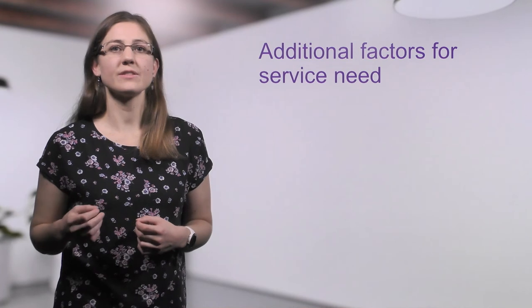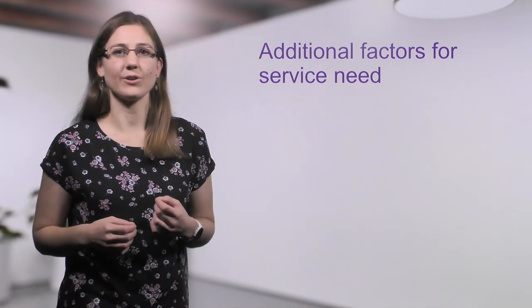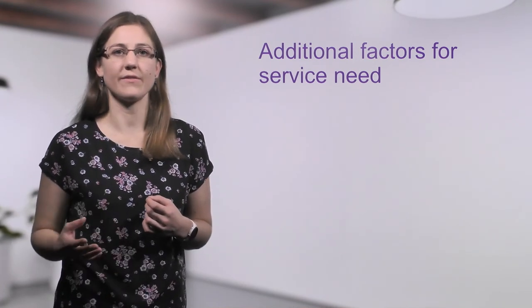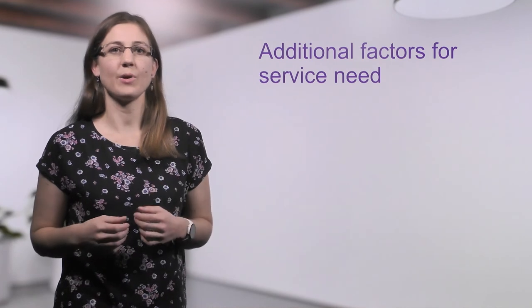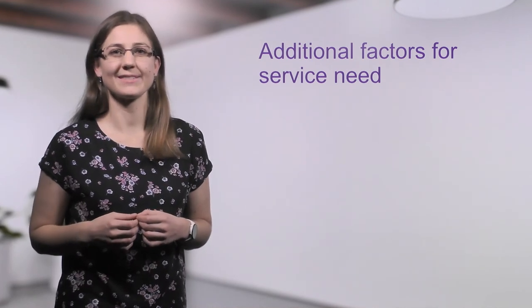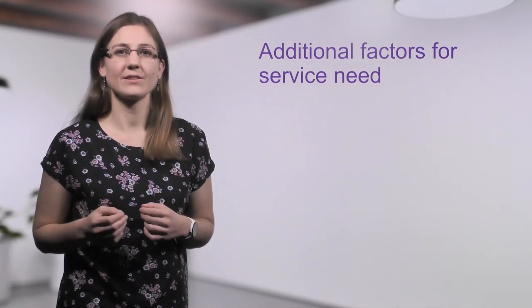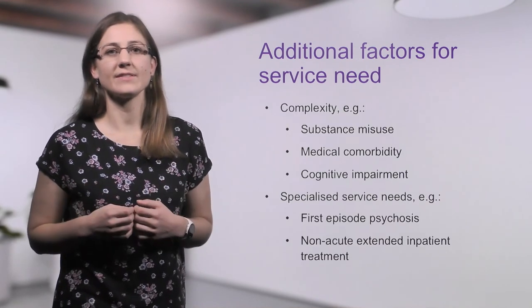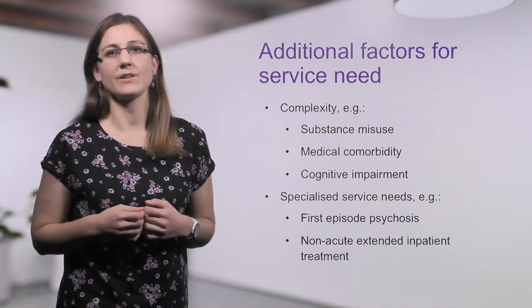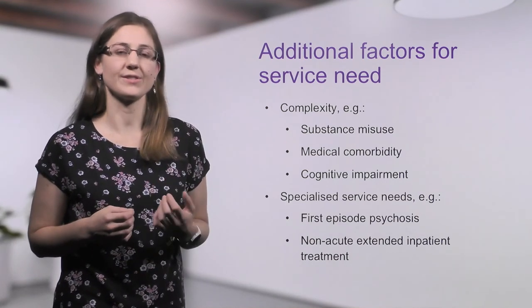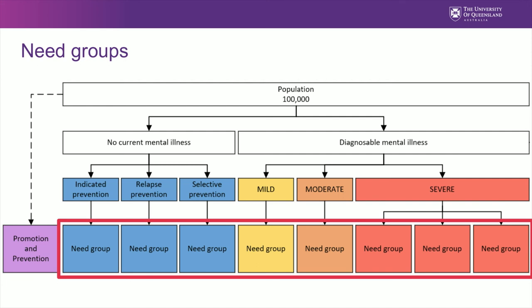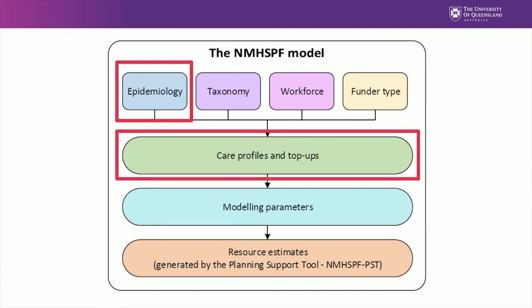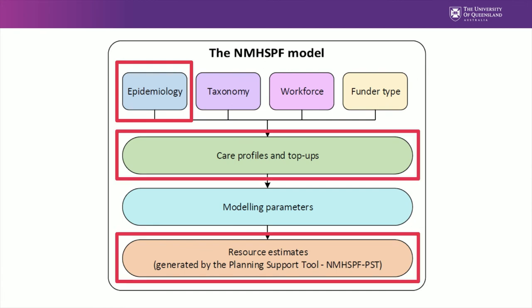Additional factors beyond severity are used to create need groups that represent people with similar service needs, particularly for populations with severe mental illness. The need groups are based on additional complexity such as comorbidities, or specialised service needs such as young people experiencing their first episode of psychosis. This modelling results in multiple different need groups for each age group. The framework then outlines care profiles and resourcing required for each need group.